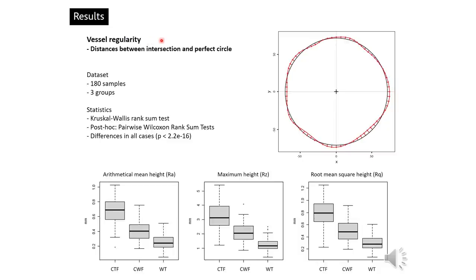The first analysis was based on the comparison of vessel regularity. Regularity was presumed to be reflected by distances between points on the sections in red and the perfect circle passing through them in black. Based on these measures, several basic roughness parameters — such as mean height, maximum height, and root mean square height — were calculated. The distribution of these parameters for three types of fabrication techniques can be seen in these box plots. We can see at a glance that all three parameters express similar tendencies.